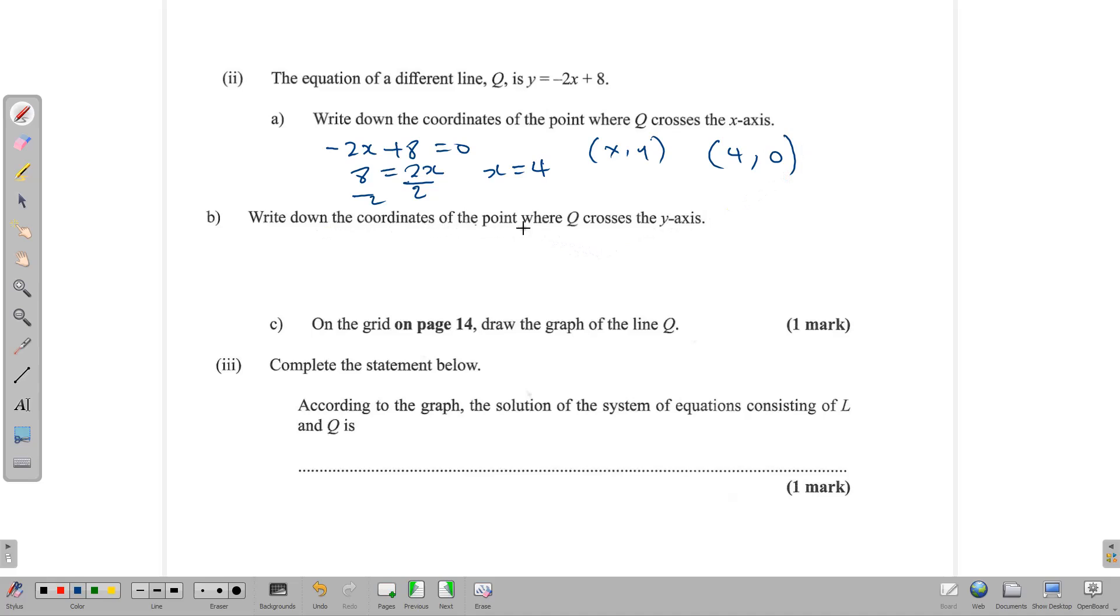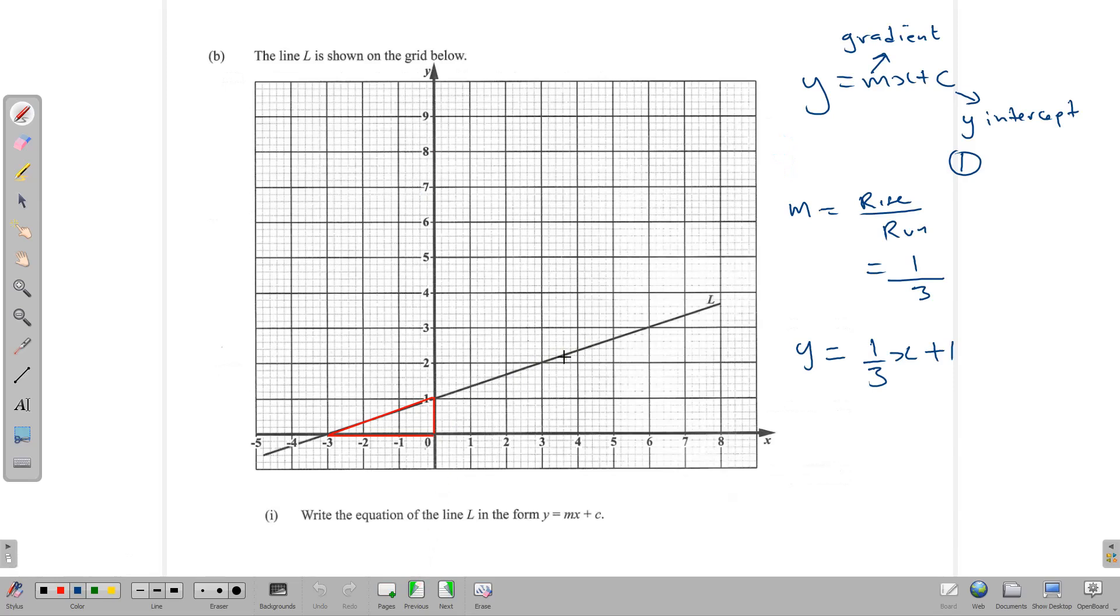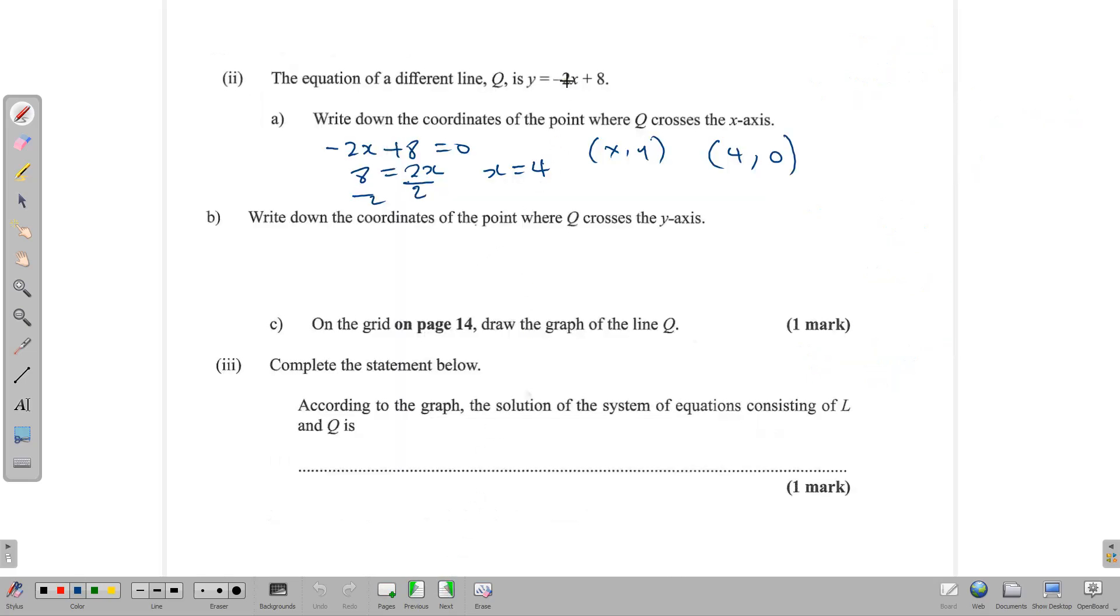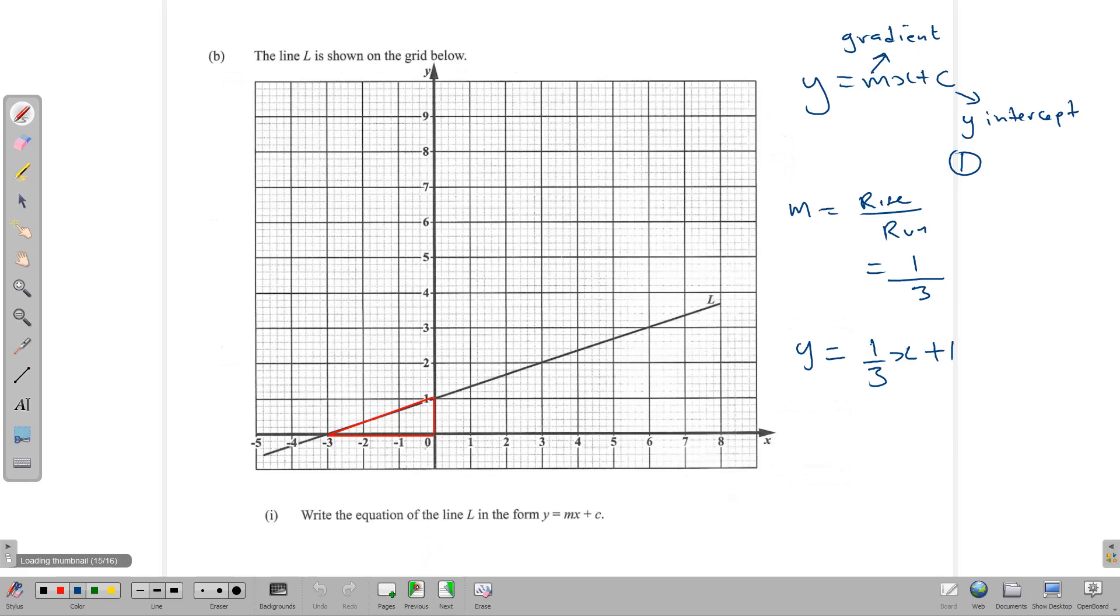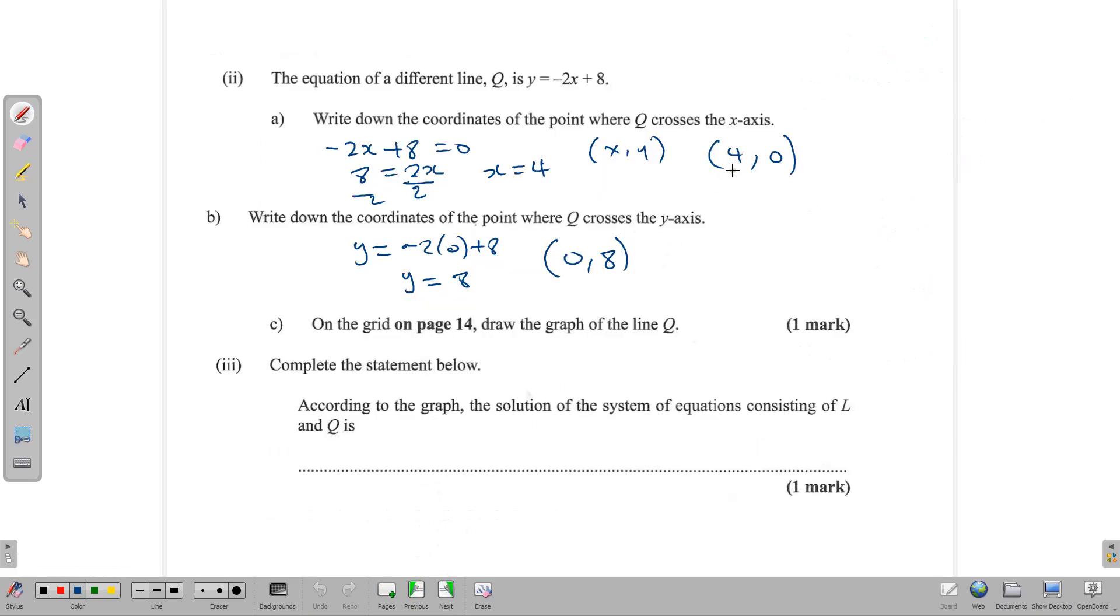Now we want to write down the coordinates of the point where Q crosses the y-axis. Notice when this graph crosses the y-axis, the x number is also 0. So we simply need to make the x number 0. So we have y equals negative 2 times 0 plus 8, which tells us that our y value is equal to 8. So our coordinate then, the x number is 0 and the y number is 8. So we have our coordinates 0, 8.